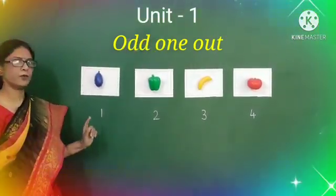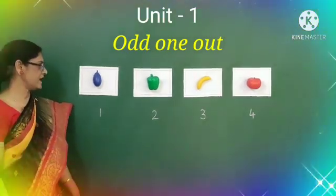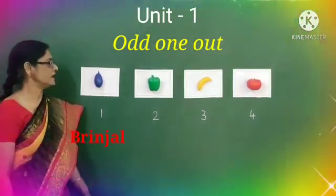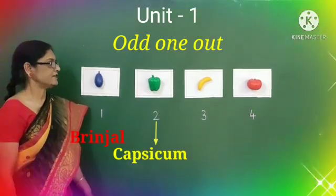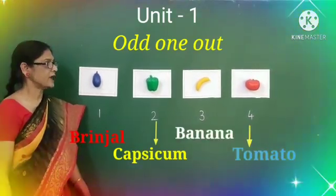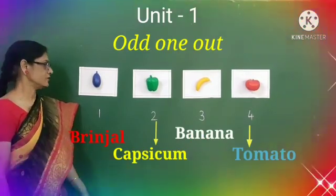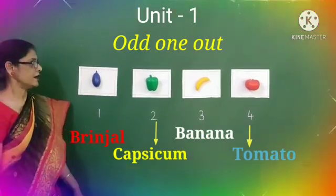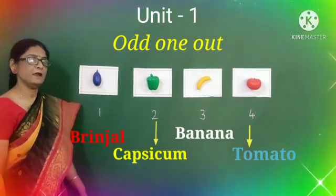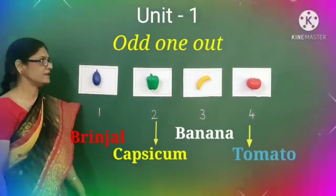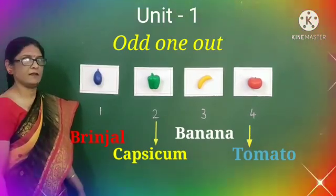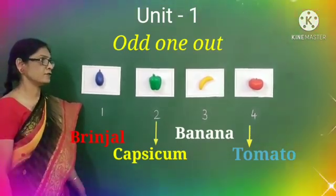What can you see on the board? Yes children, number one is brinjal, number two is capsicum, number three is banana and number four is tomato. So children, brinjal, capsicum and tomato are the same because these are vegetables, and banana is different because it is a fruit.